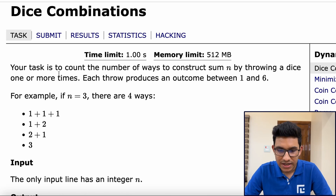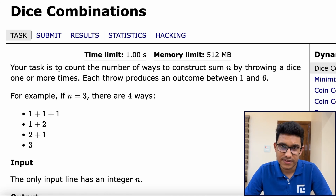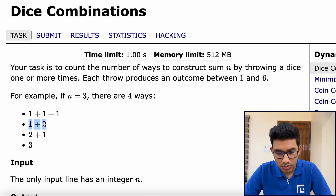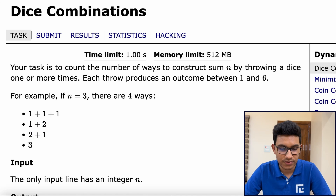For example, if n is equal to three, there are four ways to construct this integer three. One way is to have one, one, one. Second way is to have one and two. Third way is to have two and one. And the fourth way is to just have three.